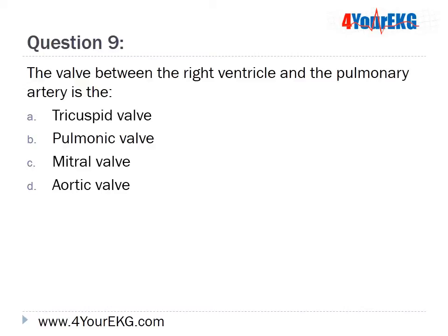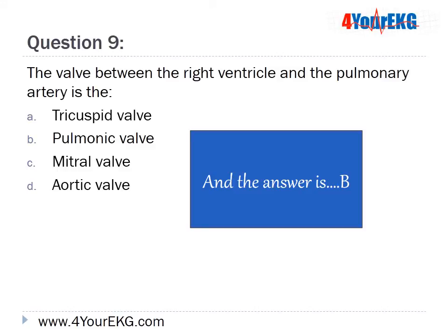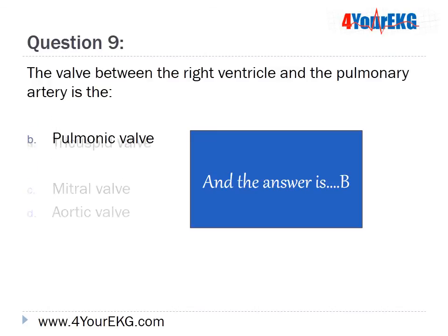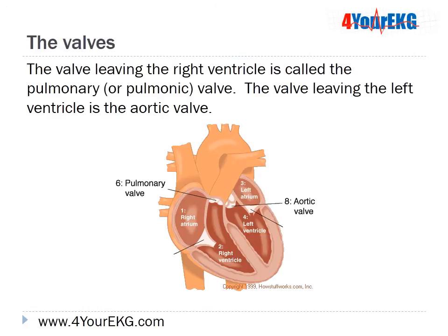Question 9: The valve between the right ventricle and the pulmonary artery is — A. Tricuspid valve, B. Pulmonic valve, C. Mitral valve, or D. Aortic valve. The answer is B — Pulmonic valve. The valve leaving the right ventricle is called the pulmonary or pulmonic valve, and the valve leaving the left ventricle is called the aortic valve.